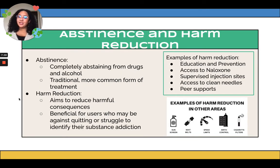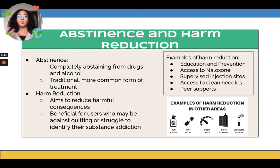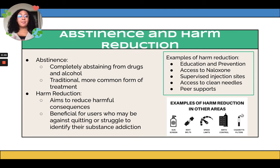To address addiction and dependence, there are two types of prevention or treatment: abstinence and harm reduction. Abstinence is the more traditional and common form of treatment — completely abstaining from drugs and alcohol. Harm reduction mainly aims to reduce the harmful consequences without necessarily abstaining, which may be beneficial for users in denial of their addiction, those against quitting, or those who struggle to identify their addiction. It may be better for people who are more wary of abstinence.